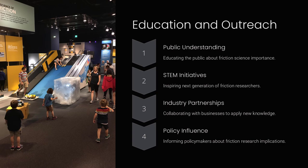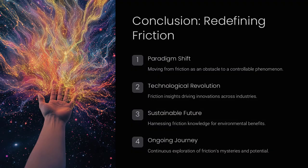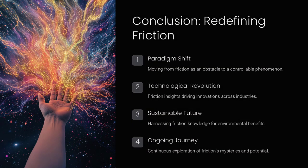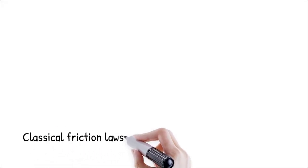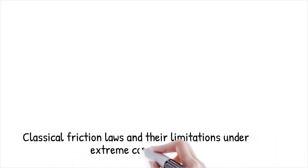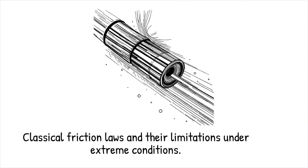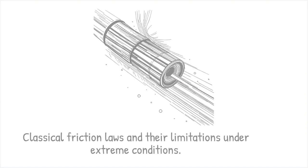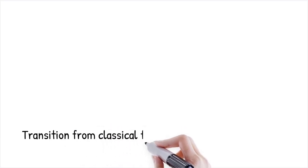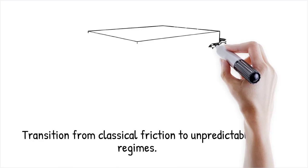Understanding these paradoxes might bring us closer to unlocking entirely new possibilities in physics and engineering. Friction is often described by classical laws such as Amontons' laws, which state that friction is proportional to the normal force and independent of contact area. However, at extreme pressures and high speeds, friction deviates significantly from these principles due to quantum and nanoscale effects. The paradox lies in how materials transition from classical friction behavior to regimes where friction can decrease, increase unpredictably, or even vanish under certain conditions.